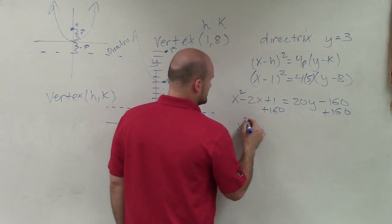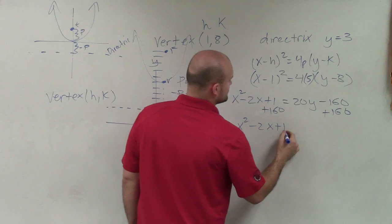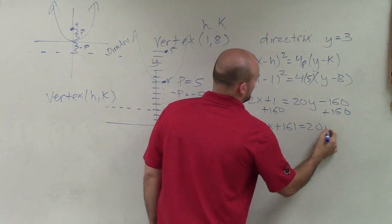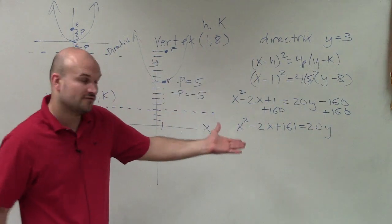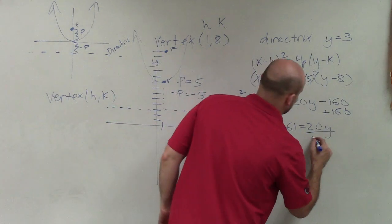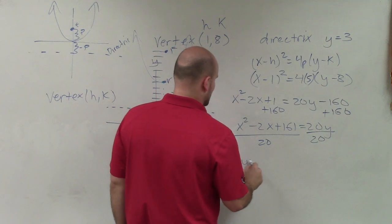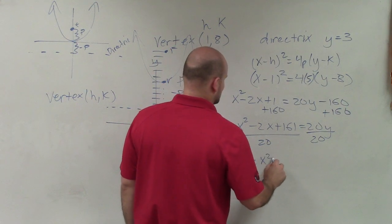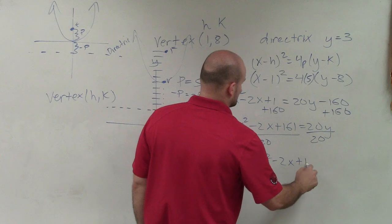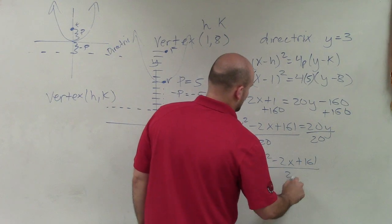So I'm sorry. That's x squared. So I have x² - 2x + 161 = 20y. Now, to solve for y, the last step is I need to divide by 20. So y = (x² - 2x + 161) / 20.